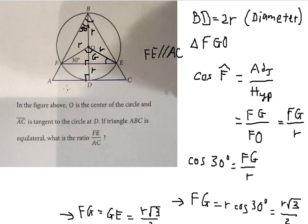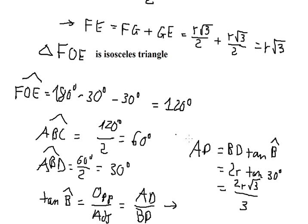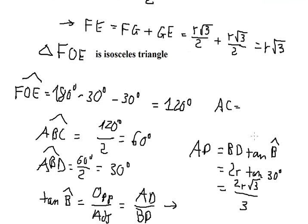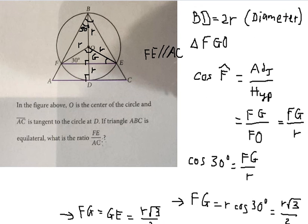Now we want to find AC. AC equals AD plus DC. Since AD equals DC by symmetry, AC equals 2 times AD, which gives AC equals 4R times the square root of 3 over 3.